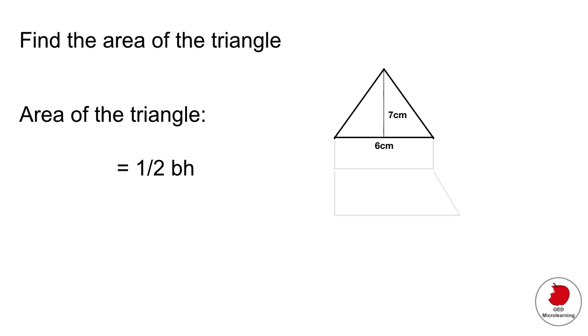Step one, find the area of the triangle. So let's just look at that bit. That's the formula for the area of a triangle. This is provided for you in the GED in your cheat sheet that they give you formula sheet. So all you have to do is plug in the numbers. So the base is six, the height is seven, that gives you 21.